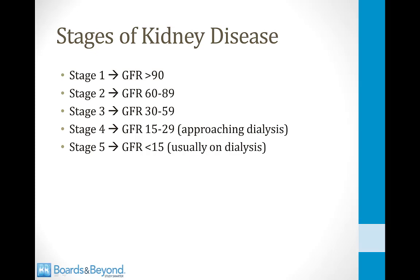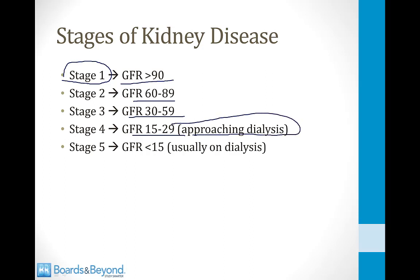Hypertensives develop hypertensive nephrosclerosis and diabetics develop diabetic nephropathy. Chronic kidney disease is staged by GFR: Stage 1 is GFR greater than 90 with risk factors; Stage 2 is 60–89; Stage 3 is 30–59; Stage 4 is 15–29 (approaching dialysis); Stage 5 (ESRD) is GFR under 15, when most patients are on dialysis.